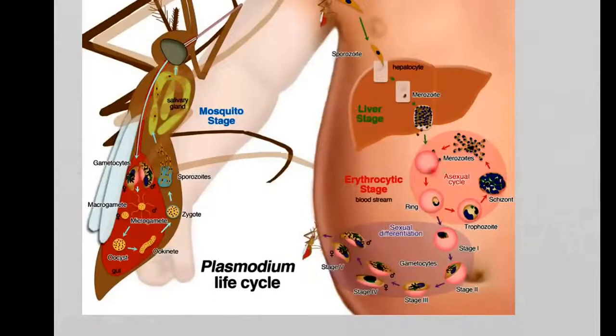So in this erythrocytic or red blood cell cycle, we generate more and more and more of these malaria parasites.